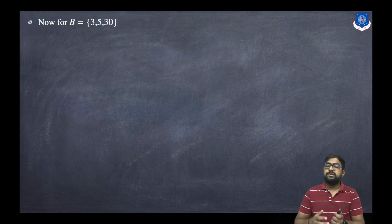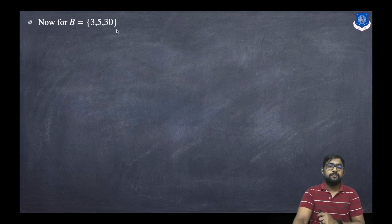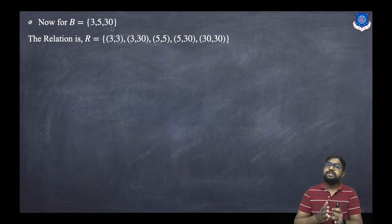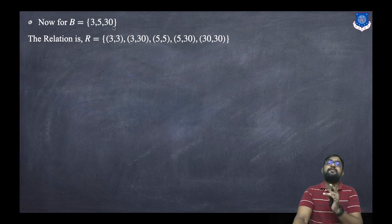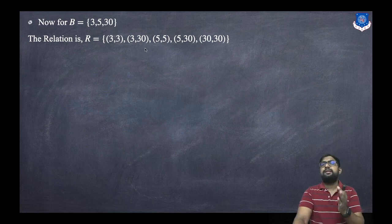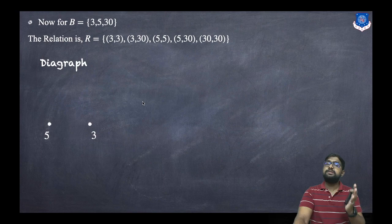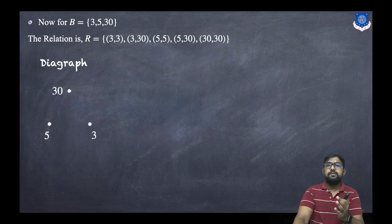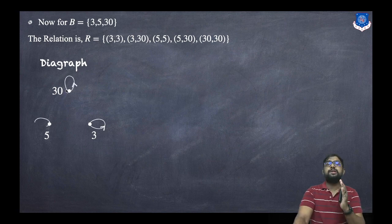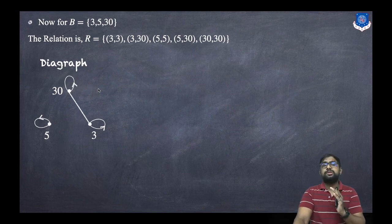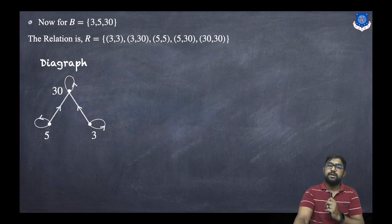Now for the second set B = {3, 5, 30} under the divides relation. All numbers divide themselves, so (3,3), (5,5), (30,30). Then 3 divides 30, giving (3,30), and 5 divides 30, giving (5,30). So there are five ordered pairs in total. For the digraph, draw points 3, 5, and 30 with self-loops, plus edges 3→30 and 5→30.